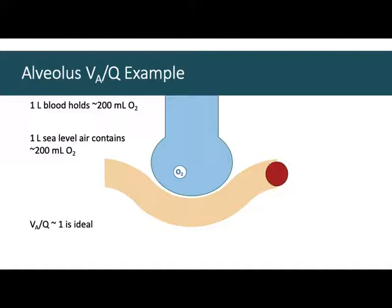If you think in terms of amounts, one liter of blood can hold about 200 mils of oxygen. And conveniently, a liter of air contains about 200 mils of oxygen. If we can match a liter of blood with a liter of air, we'll also achieve the matching we're looking for, that desired ratio. So ideally, we want about a ratio of one. The air in the alveoli matches the amount of blood seen by the alveolus as well.